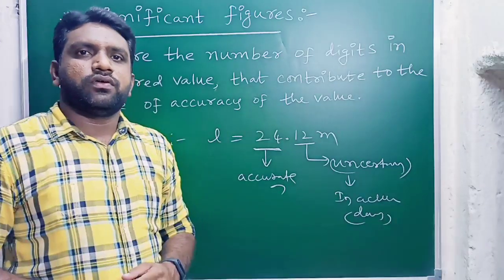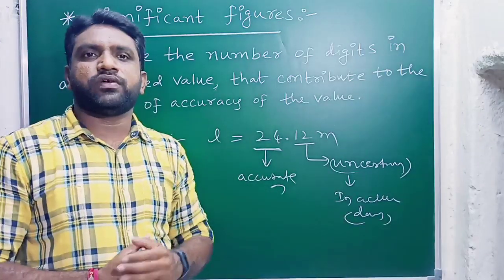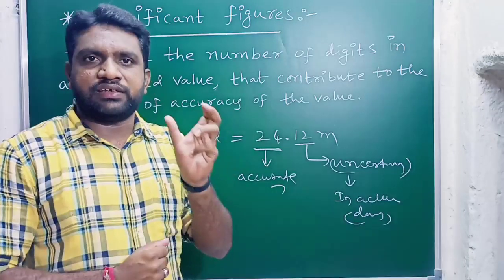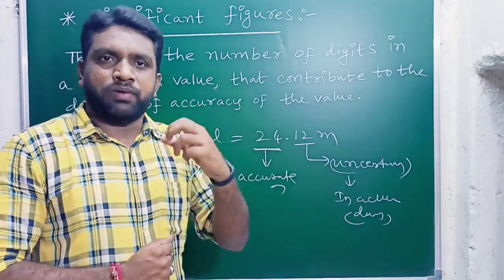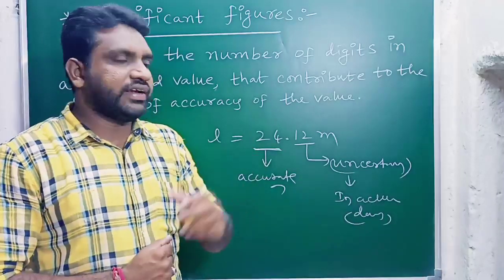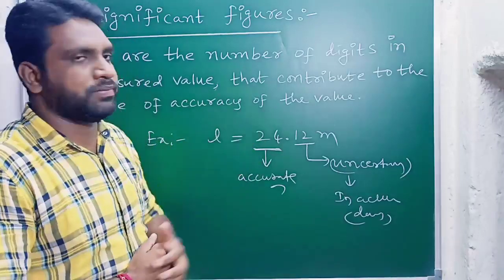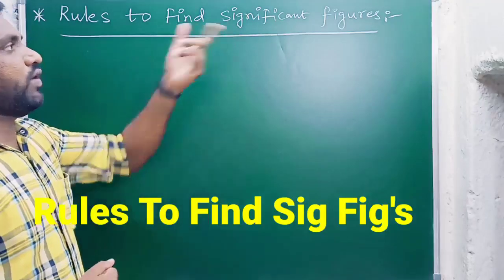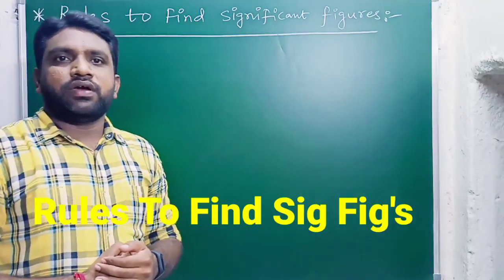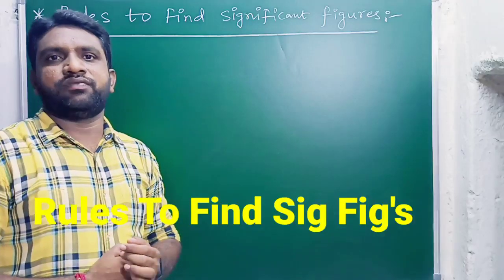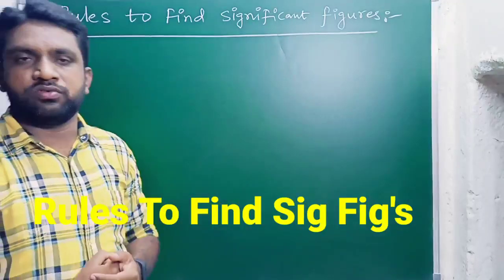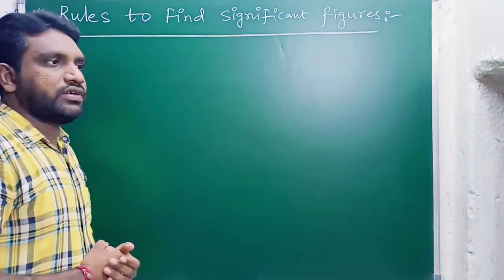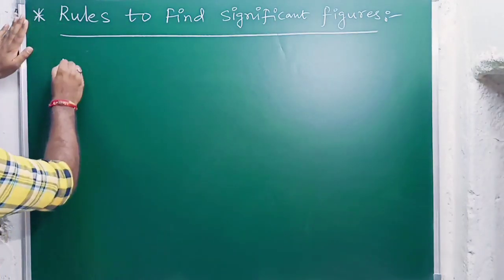Including this, significant figures also indicate the level of exactness of the instrument by which we measure. It indicates the exactness or accuracy of the instrument as well. Now let us know the rules to find significant figures — we have to follow some rules to decide which numbers are considered as significant figures.